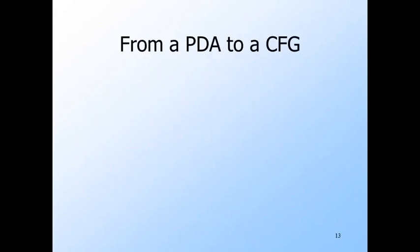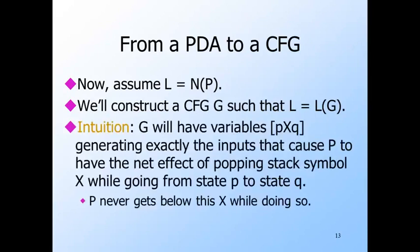For our next trick, we'll show how to convert PDAs to grammars. Assume language L is accepted by PDA P by empty stack. If it were accepted by final state, we already know how to construct a new PDA that accepts L by empty stack. So we're entitled to assume acceptance by empty stack. We'll construct G, a grammar for L, and the idea is to give G variables, which we'll denote by [p, X, q] with brackets around them. Its job, the job of this variable, is to generate all and only the strings W such that while reading W from the input, P goes from state p to state q and appears to pop X from the input. While doing so, P can grow the stack well above where X was, but it can never go below where X was, and at the end the stack is shorter by one than it was when it started. That is, the net effect is that X has been popped.